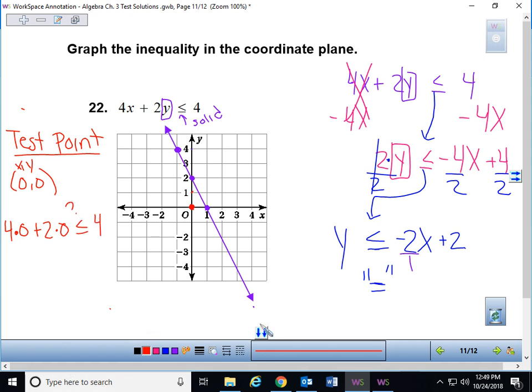So this gives me 4 times 0 plus 2 times 0 less than or equal to 4? Because I don't know if it's true yet. Well, 4 times 0, 0 plus 2 times 0, 0 less than or equal to 4. 0 plus 0, 0.